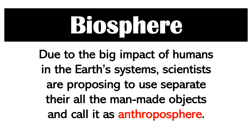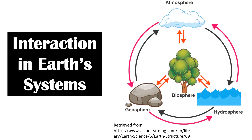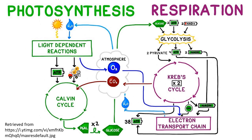Scientists are proposing that humans be separated into another sphere, which they call the anthroposphere. Since all of the systems of our planet are classified as open systems, many interactions are happening within the four spheres. An event that happens in the biosphere may affect the three other spheres, and the same is true for events occurring in any other sphere. This diagram shows the interaction between the biosphere and the atmosphere — the success of photosynthesis and respiration is also related to the properties and functions provided by the hydrosphere and lithosphere.